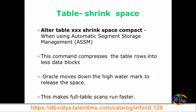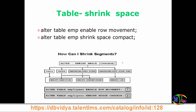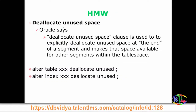What was just run — enable row movement and SHRINK SPACE COMPACT — you can also use DEALLOCATE UNUSED SPACE. That command deallocates unused space at the end of the segment only. So it handles space at the tail end of the segment. With these commands you can reset the high watermark, thereby improving performance.